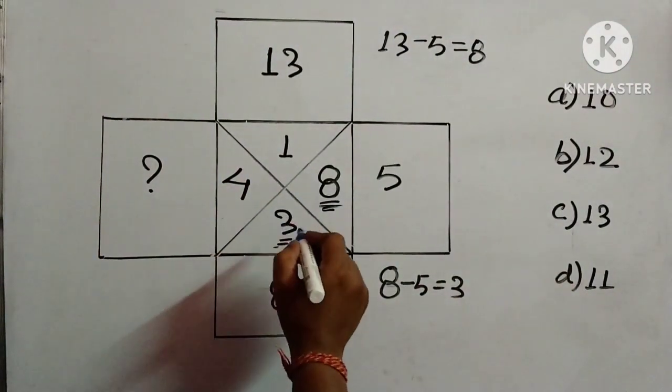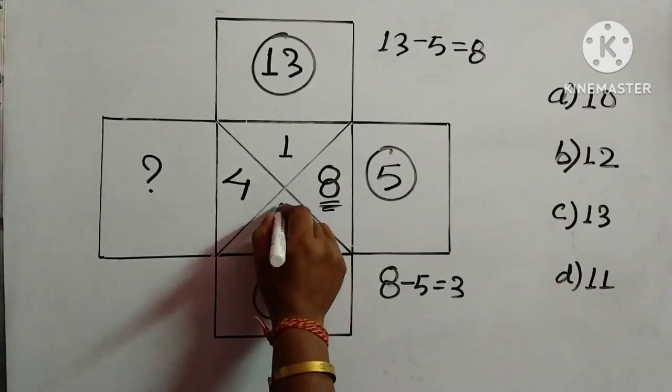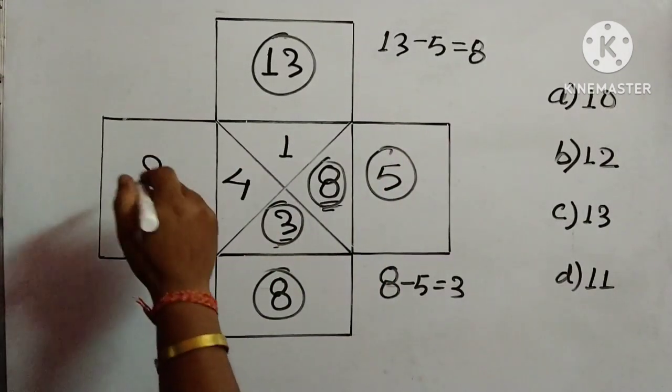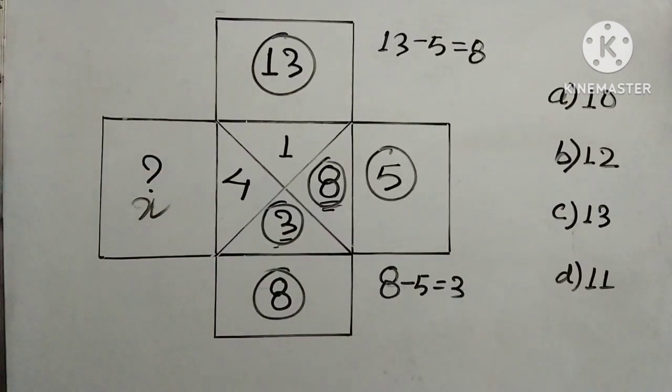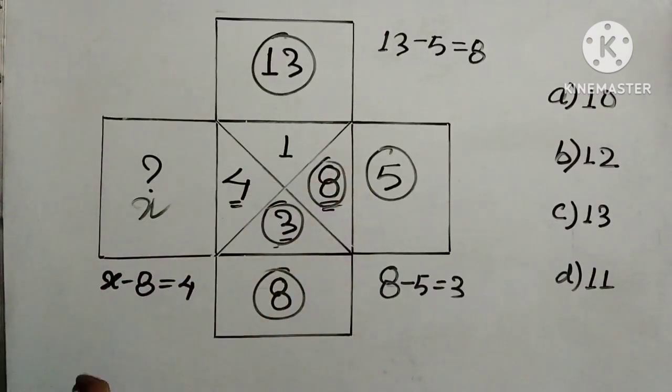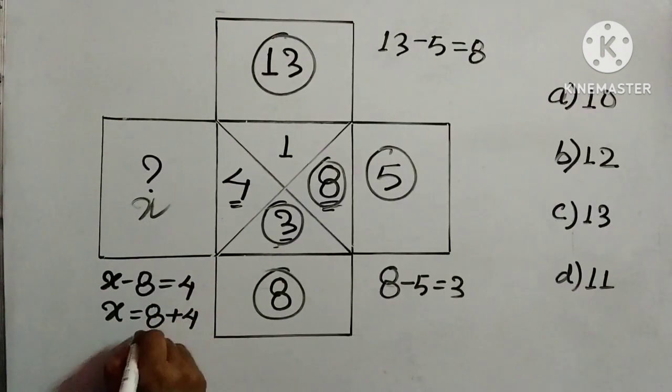So we have taken this number, this number and this number and the results are over here. So, we are left with 1 and 4, so we have to find out a number which will hold true for this relation. So, if we will consider here, this is x, so according to the pattern, x minus 8 should be equal to 4, so that means x is equal to 8 plus 4 which is equal to 12.